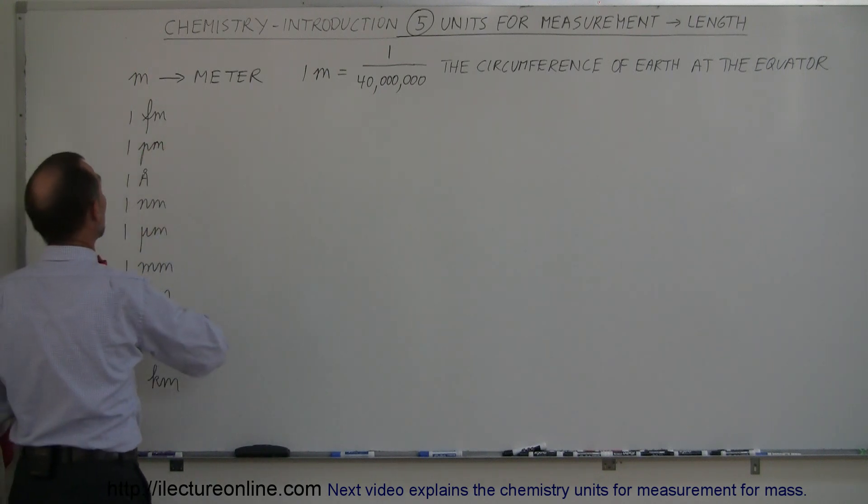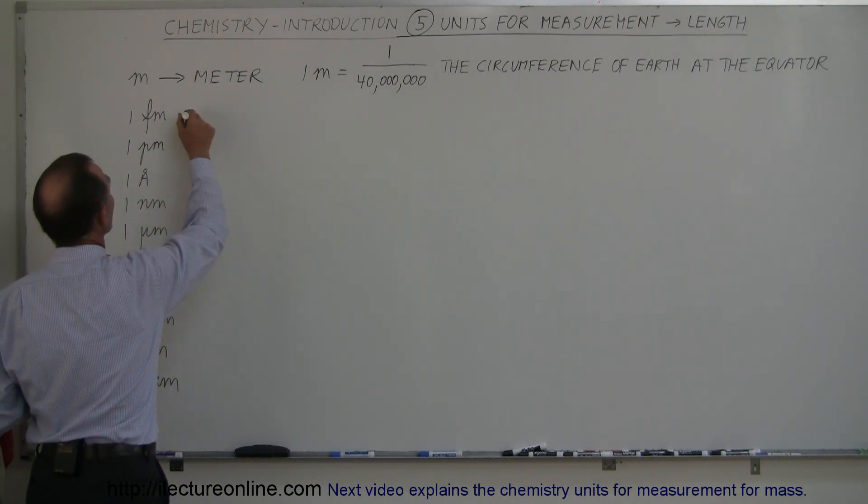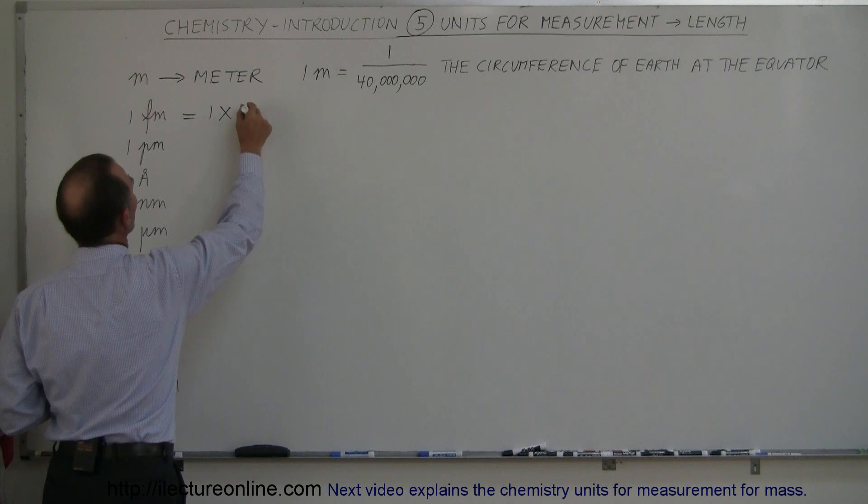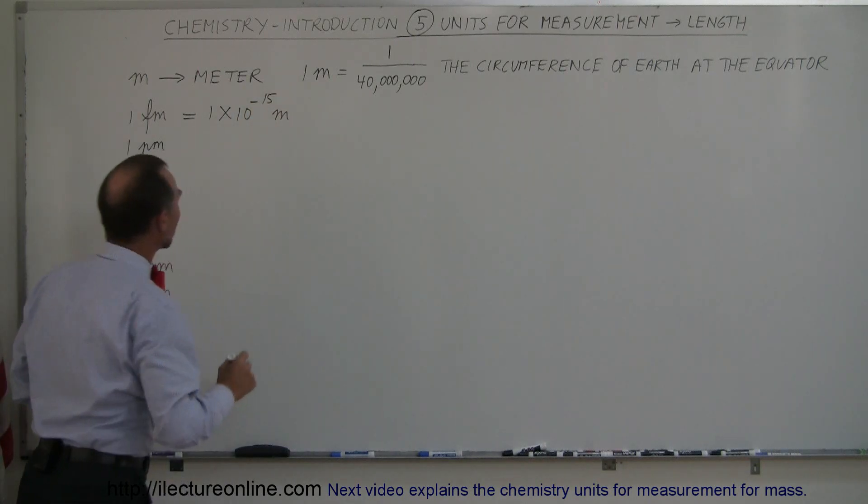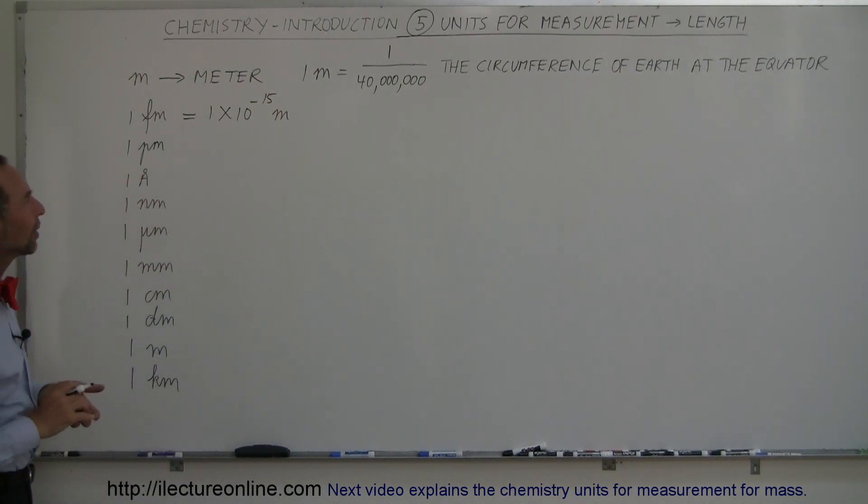The first unit we want to know is the femtometer, which is 1 times 10 to the minus 15 meters. That's usually units that we associate with the size of the nucleus of an atom. It's usually in terms of 1 or 2 or 3 femtometers, 1 times 10 to the minus 15 meters.